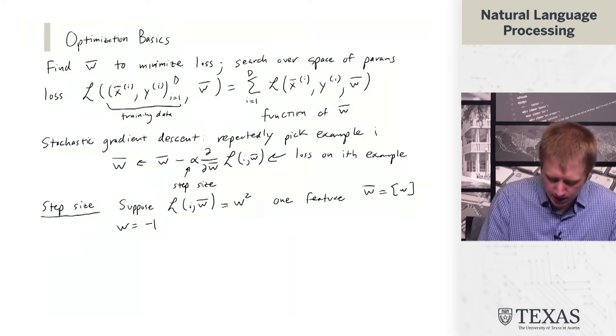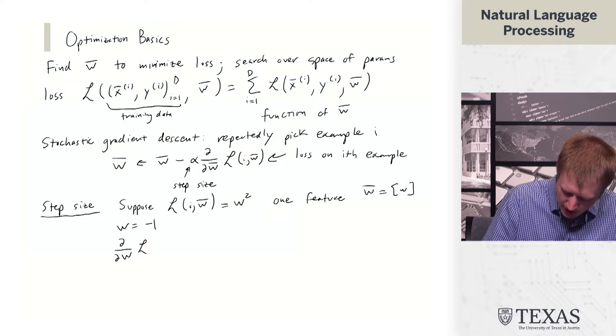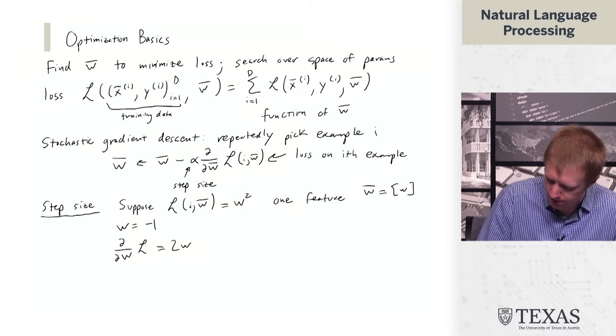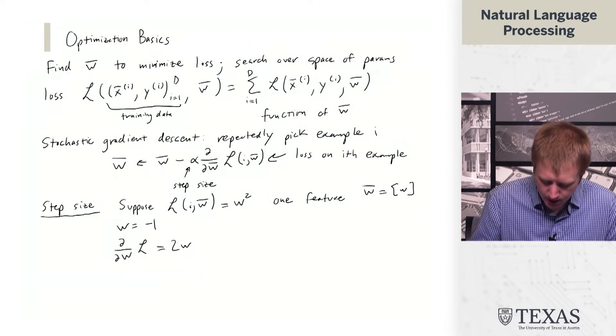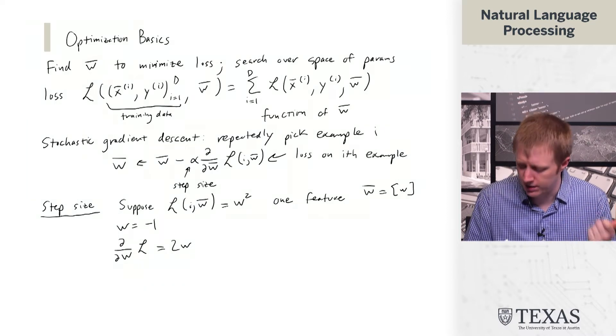Let's suppose further that W equals minus one is our initial starting point. The gradient of L with respect to W is just 2W.